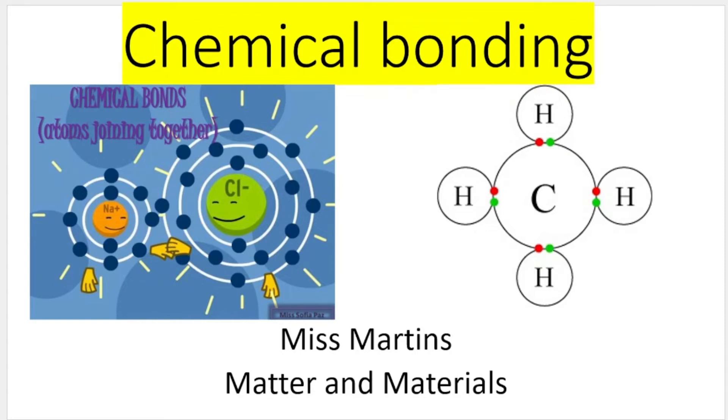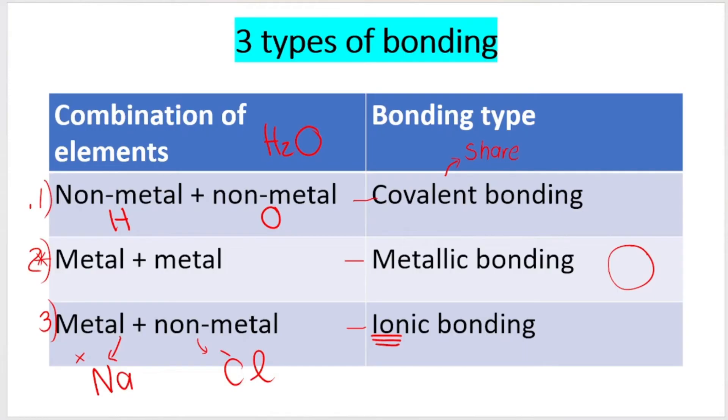Hello grade 10s and welcome back to another video on chemical bonding with me, Ms. Martins. In the previous videos on chemical bonding, we looked at two types of bonding: ionic bonding and covalent bonding. In this video, we're going to focus on metallic bonding. So just a very brief recap about the three types of bonding that you need to know in grade 10.